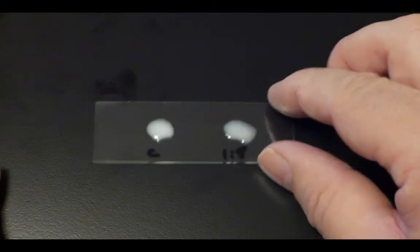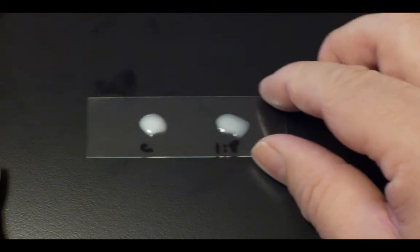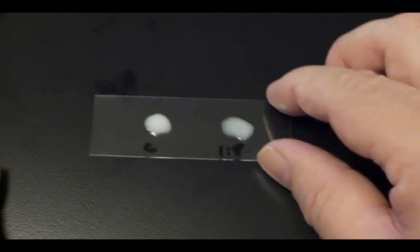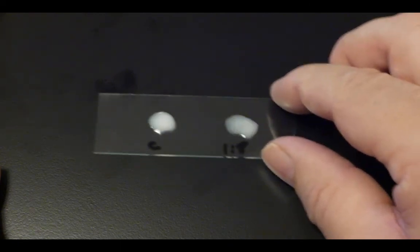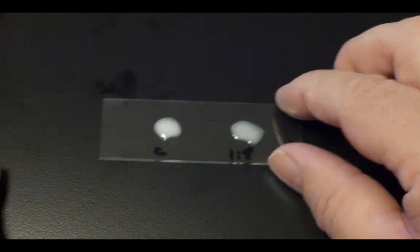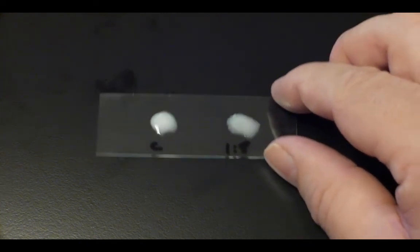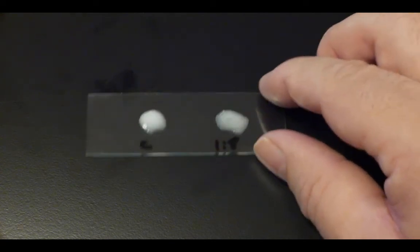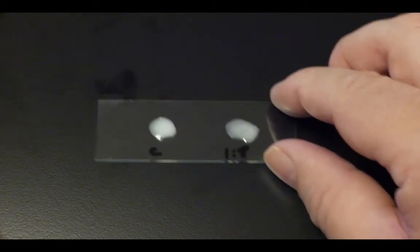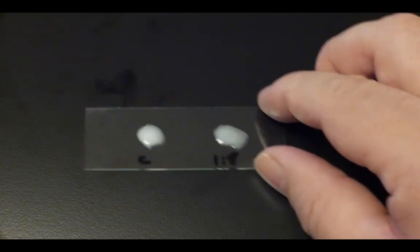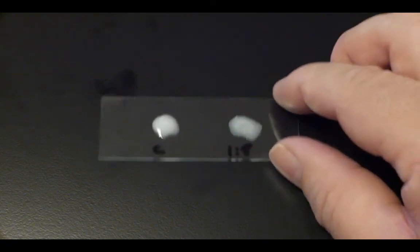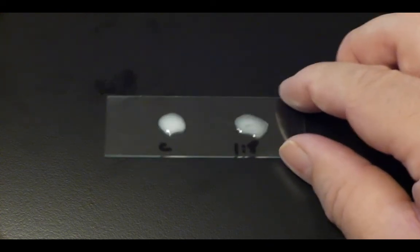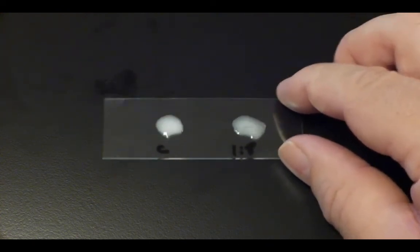As you rotate the slide you may start to notice a change in the two spots. If you look carefully you will see that the one on the left, C, the control spot, is remaining relatively milky. Whilst the spot on the right which is a 1 in 8 dilution of the antibody in this case is beginning to go a little clumpy. You can see a dark mark appearing in the centre of the spot.